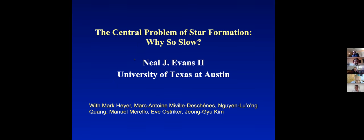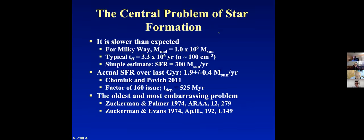Thank you, Enrique. So why do we call it the central problem of star formation? The key point is that it's slower than expected. The Milky Way has about 10⁹ solar masses of molecular gas. We typically assume that molecular clouds have an average density of 100 particles per cubic centimeter. Plugging that into the equation for freefall time gives about 3.3 million years. Dividing the mass by the freefall time, you get a predicted star formation rate of about 300 solar masses per year.